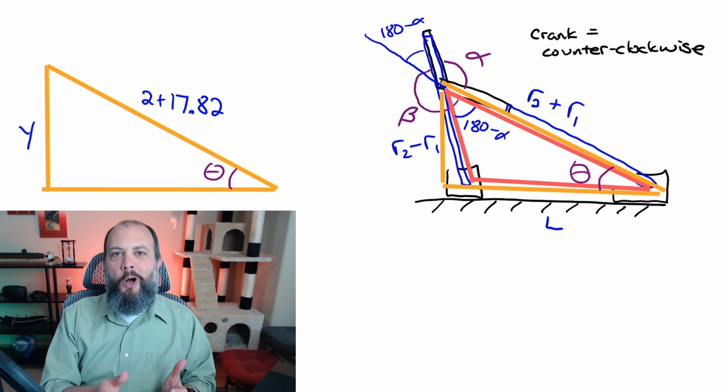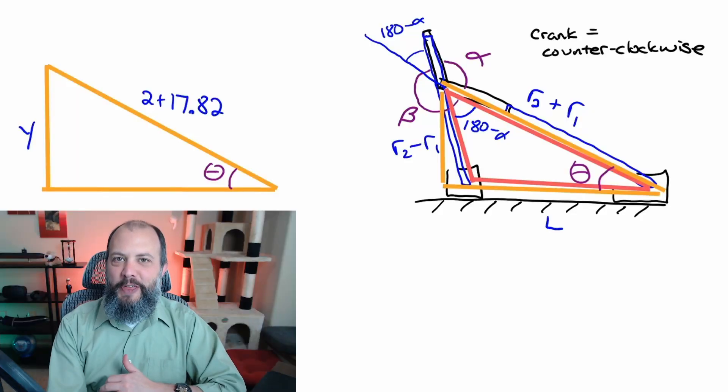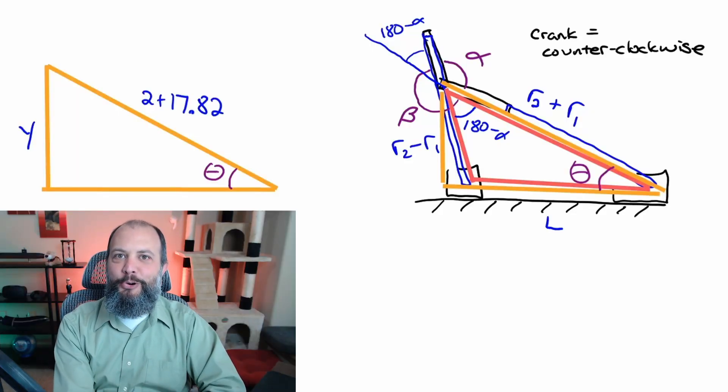And to find this offset distance y I'm going to draw one more triangle because if there's one thing I know engineering students love doing is drawing triangles. If I can just find this angle theta I can use the hypotenuse in order to get y.